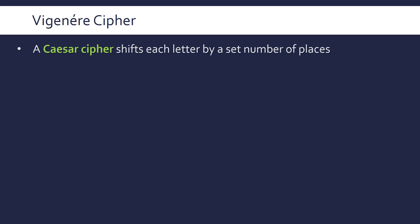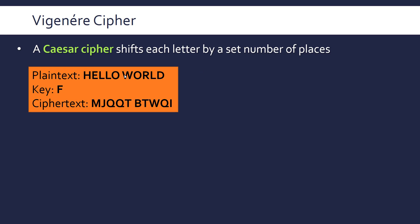Let's see how this works. First, a recap of the Caesar cipher. This encryption method shifts each letter by a set number of places — it's a substitution cipher, replacing a letter with another letter further down the alphabet. For example, with plain text 'Hello World' and a key of F, we apply this shift and end up with scrambled cipher text.